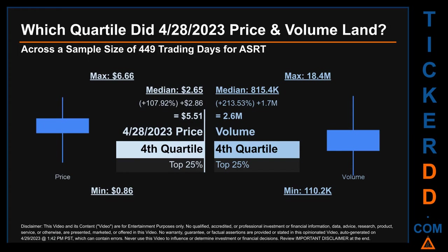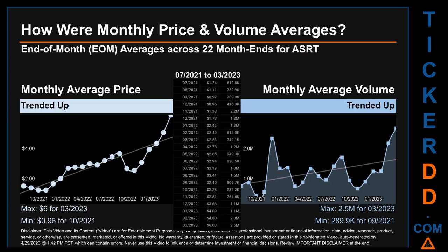Quartiles tell us about the spread of a data set by breaking that data set into quarters, just like how the median breaks a set in half. Descriptively, ASRT has a median price of $2.65. Therefore, April 28, 2023's price was higher than that middle marker by 107.92%. The day's volume of 2.6 million was more than the median by 213.53%.